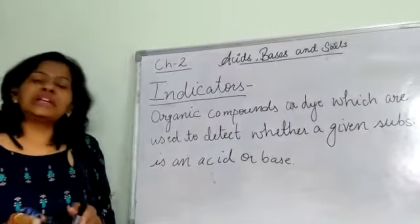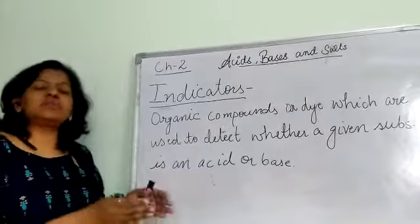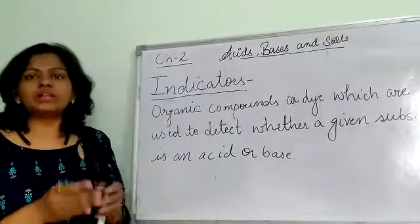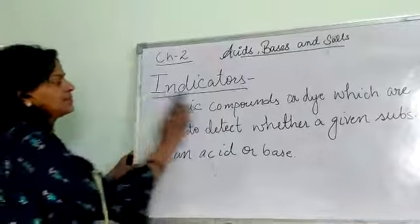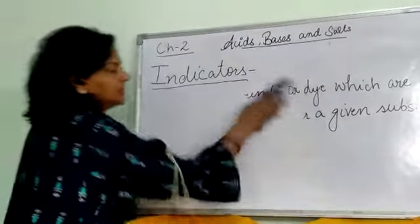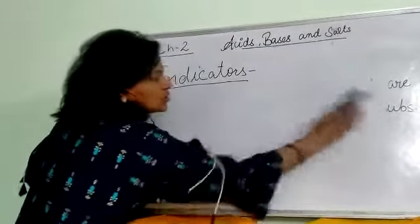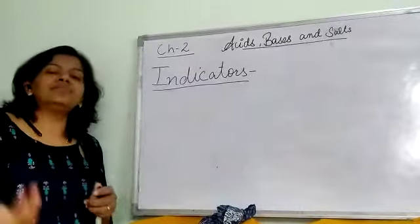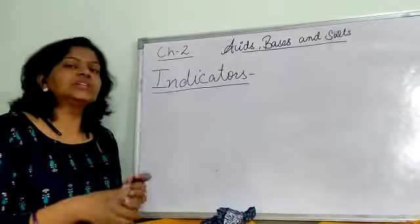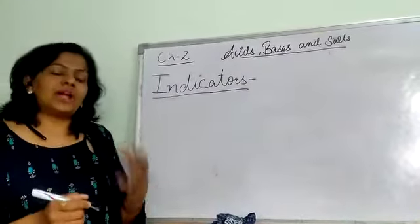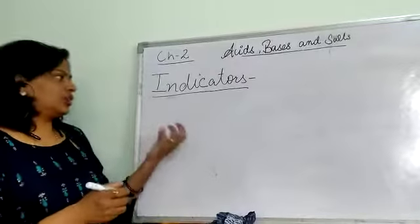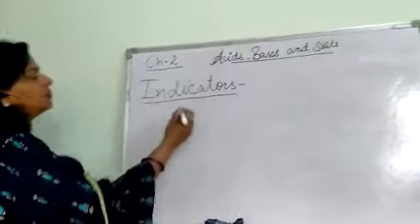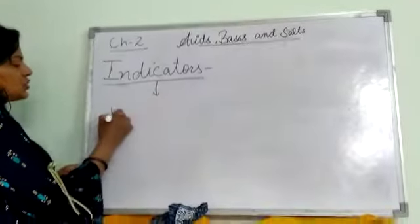Indicators are basically of two types: first, natural indicators, and second, those which are synthetically prepared in the lab, which are called synthetic indicators. Natural indicators are obtained from nature — they are extracts of plants which we get from different plants.